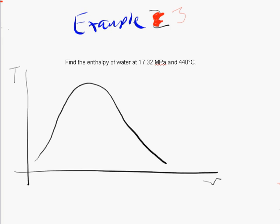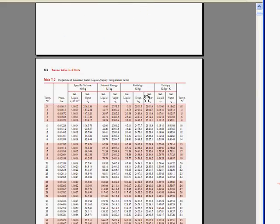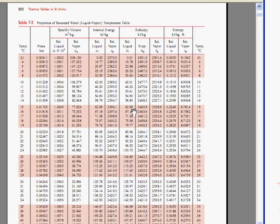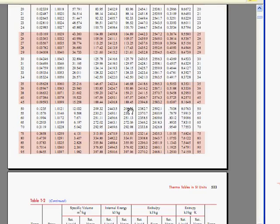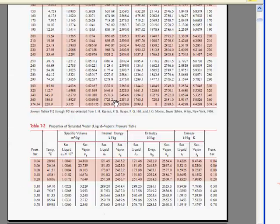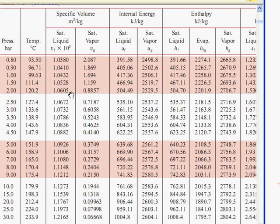Let's go to our tables. We go to the saturated water table. We're at 17.32 MPa and 440 Celsius. Now, 440 Celsius is greater than the critical temperature for water, which is 374. So, the saturated water temperature table doesn't help us there. Let's take a look at the saturated water pressure table.